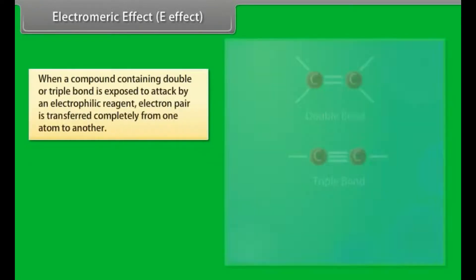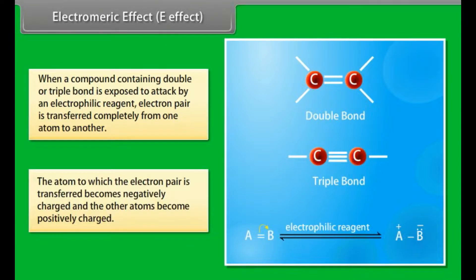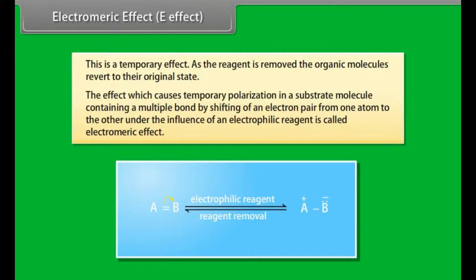Electromeric effect (E effect). When a compound containing a double or triple bond is exposed to attack by an electrophilic reagent, an electron pair is transferred completely from one atom to another. The atom to which the electron pair is transferred becomes negatively charged and the other atom becomes positively charged. This is a temporary effect; as the reagent is removed, the organic molecule reverts to its original state. This temporary polarization in a substrate molecule containing a multiple bond by shifting of an electron pair under the influence of an electrophilic reagent is called the electromeric effect.